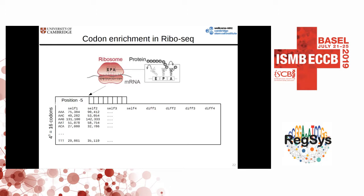In the ribosome profiling protocol, the ribosome protects approximately 27 nucleotides from RNase degradation. Those 27 nucleotides correspond to nine codons, and the middle three ones are the E, P, and A-sites in the ribosome. The A-site is where the tRNA enters the ribosome and where we have the codon-anticodon base pairing. The P-site is where the tRNA carrying the growing polypeptide chain is sitting, and the E-site is where the tRNA is exiting the ribosome. Using the 3-nucleotide periodicity and this information about the approximately 27 protected nucleotides, we can calculate the codon occurrence at each of those nine protected positions for each codon.